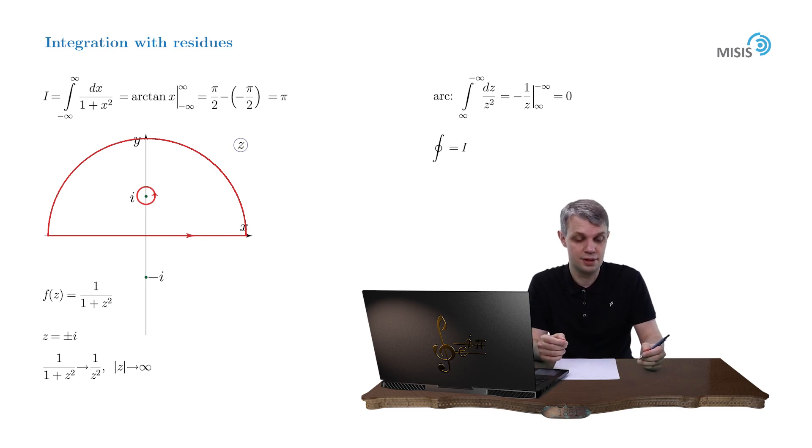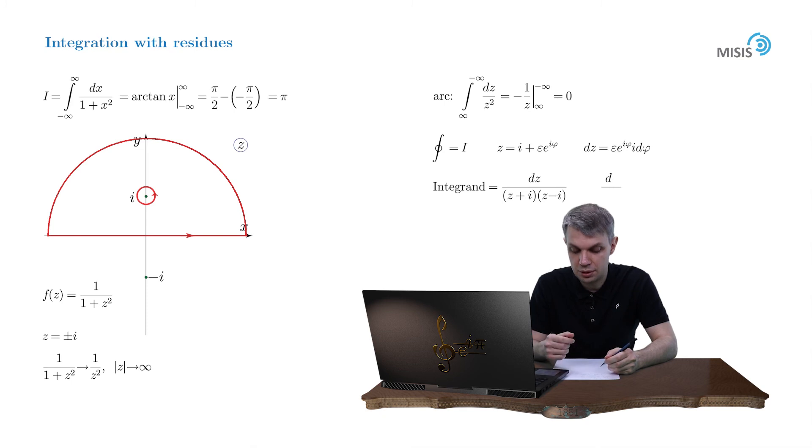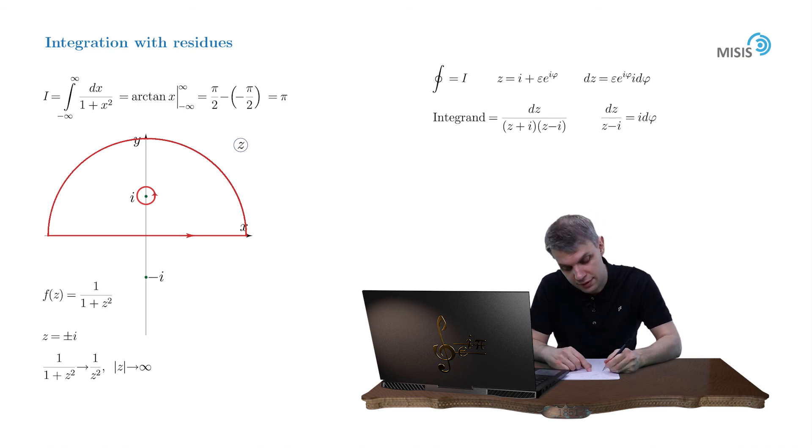And now let's compute this circular integral. As usual, we introduce the parameterization z equals i plus epsilon times e to i phi, where dz is equal to epsilon e to i phi, i d phi. And decompose our integral as dz over z plus i times z minus i. Well, dz over z minus i is simply reduced to i d phi. So in the end, we are left with the integral from